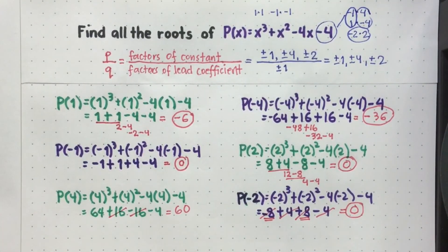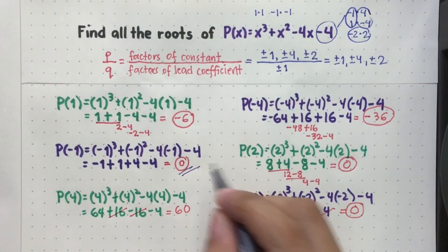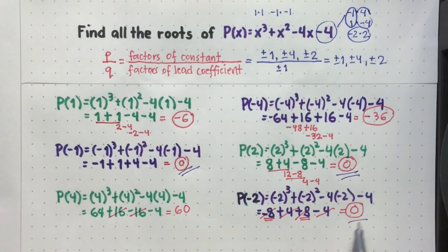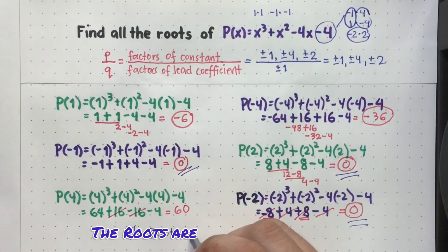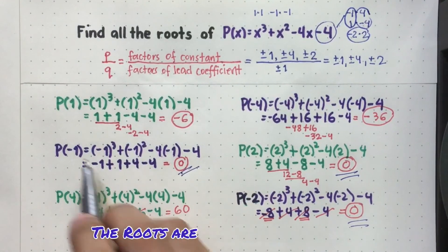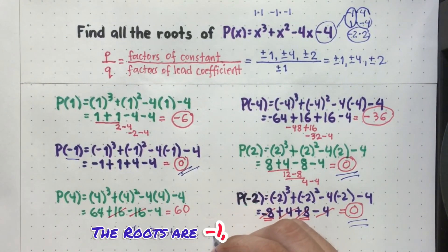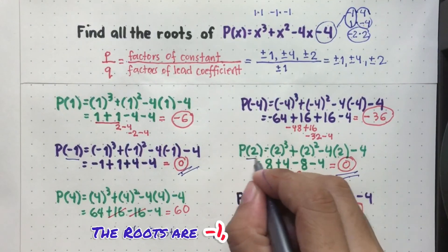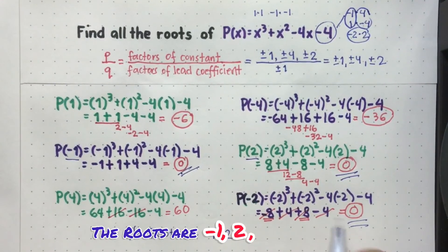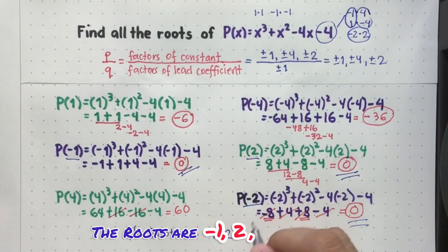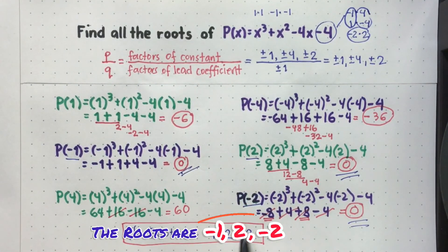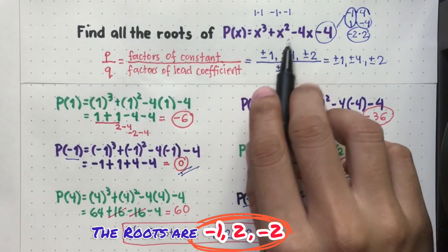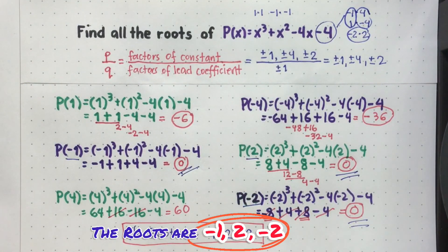Now, ano-ano na yung mga roots or zeros ng ating polynomial? Since P(-1) = 0, P(2) = 0, and P(-2) = 0, the roots of the given polynomial x cubed plus x squared minus 4x minus 4 are negative 1, positive 2, and negative 2.